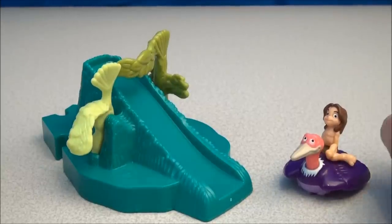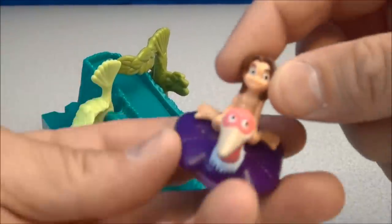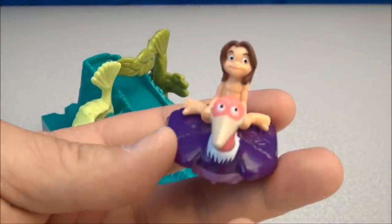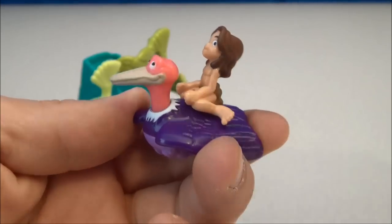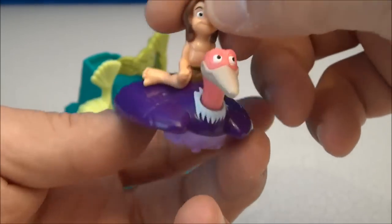Next, we have Young Tarzan, sliding figure with base. And it looks like here, if I can get this to zoom in a bit, we've got a little Tarzan figurine. It's kind of a rubbery plastic. Looks like he's riding on a vulture.